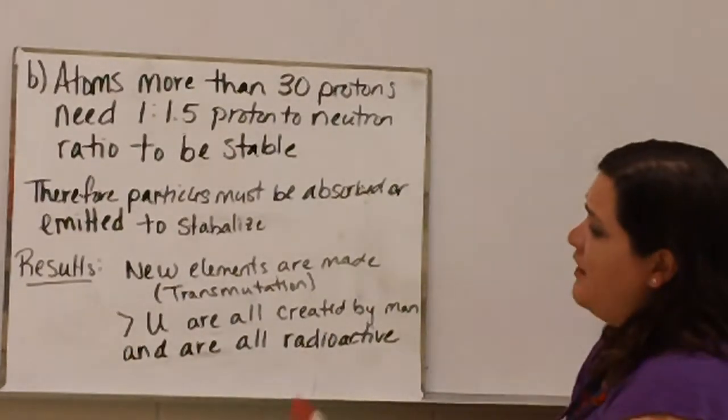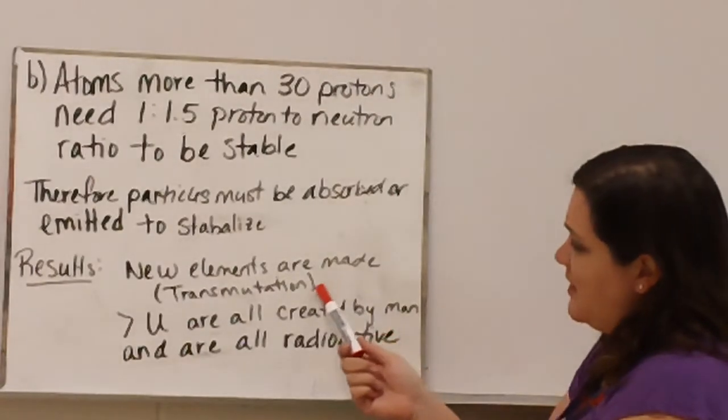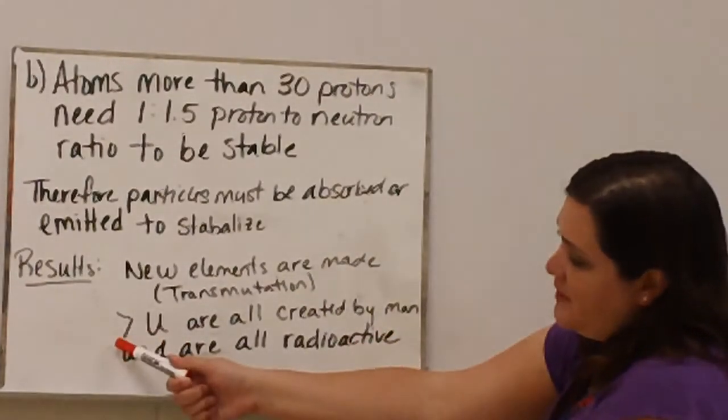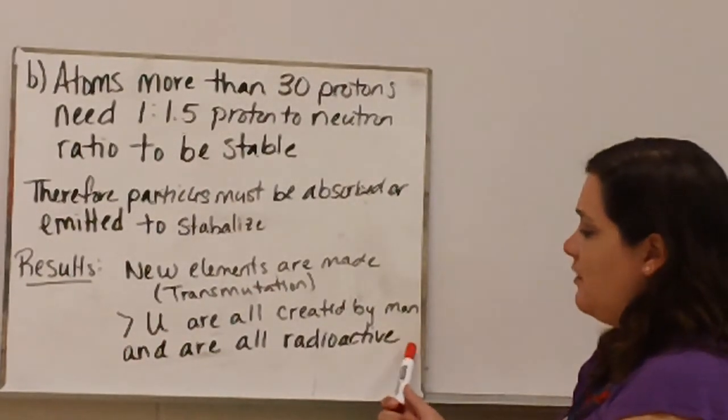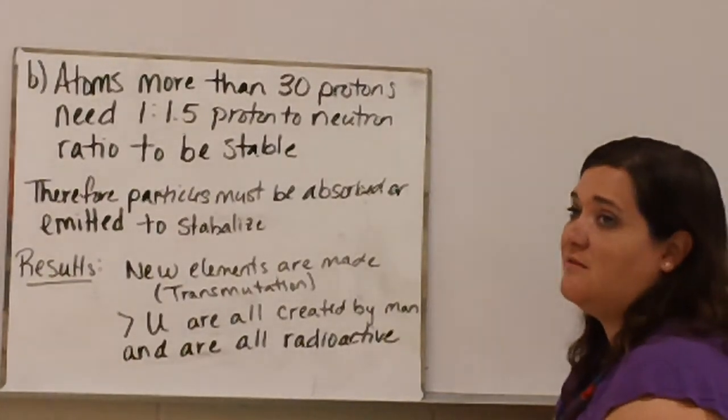The result of instability is this idea of new elements being made through the process of transmutation. All elements with atomic number larger than 92, uranium, are all created by man and are all radioactive because they don't exist naturally and so their nucleus is unstable.